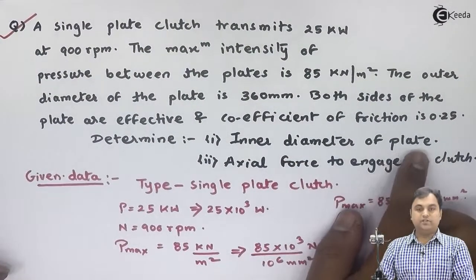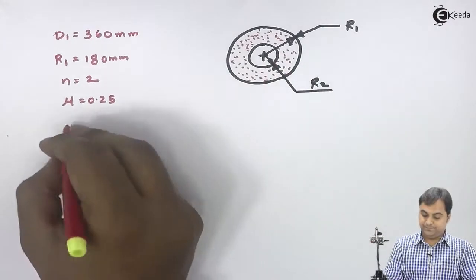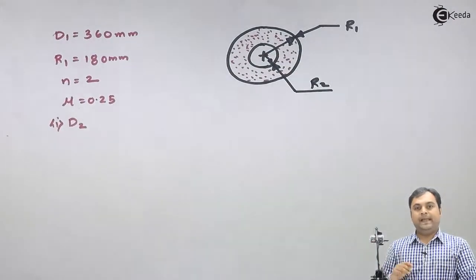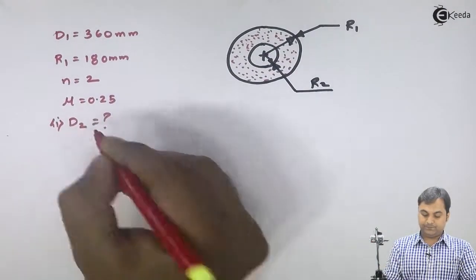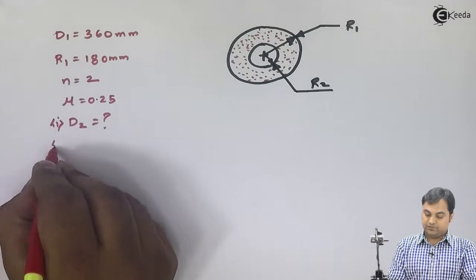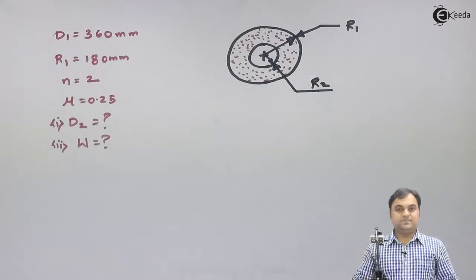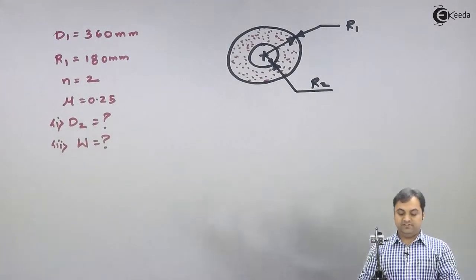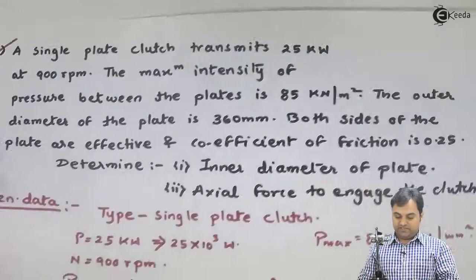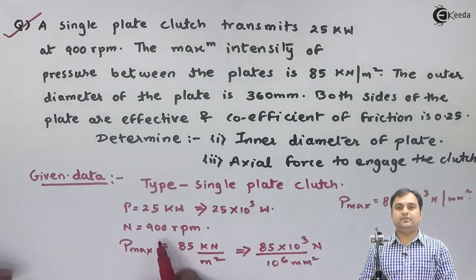We have to calculate the inner diameter D2, for which I will first calculate R2, and then calculate D2. We also need to find the axial force W to engage the clutch, which is the axial thrust. Now, since power and RPM are given, I can calculate the value of torque.